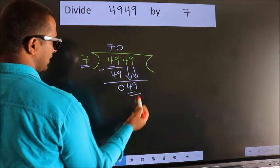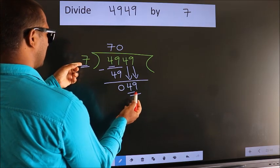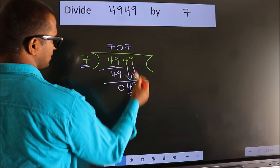When do we get 49 in the 7 table? 7 sevens equals 49.